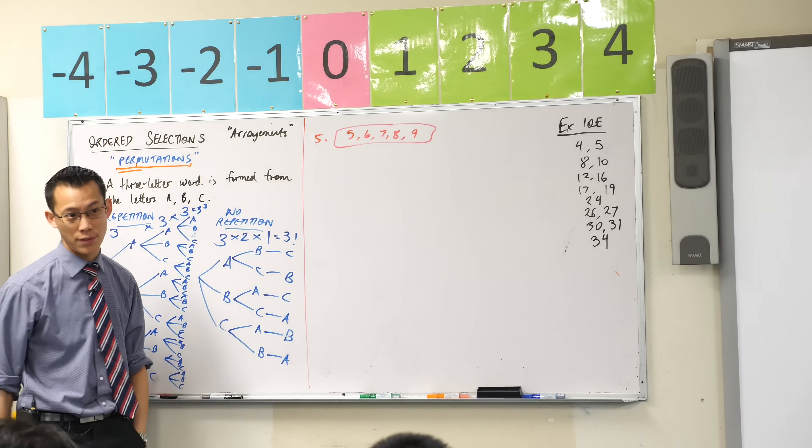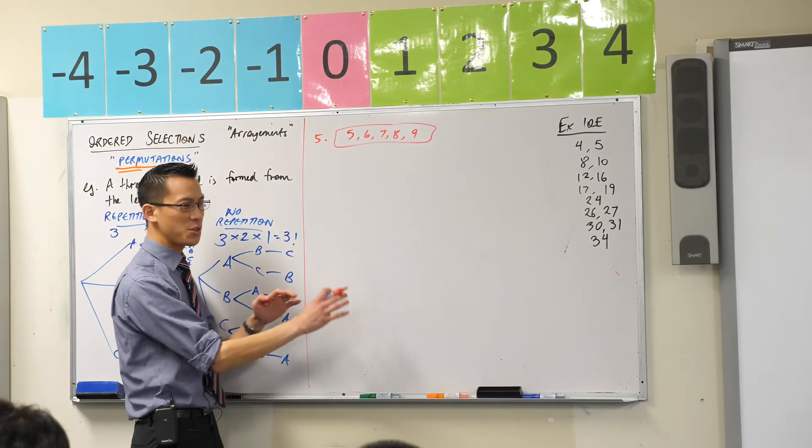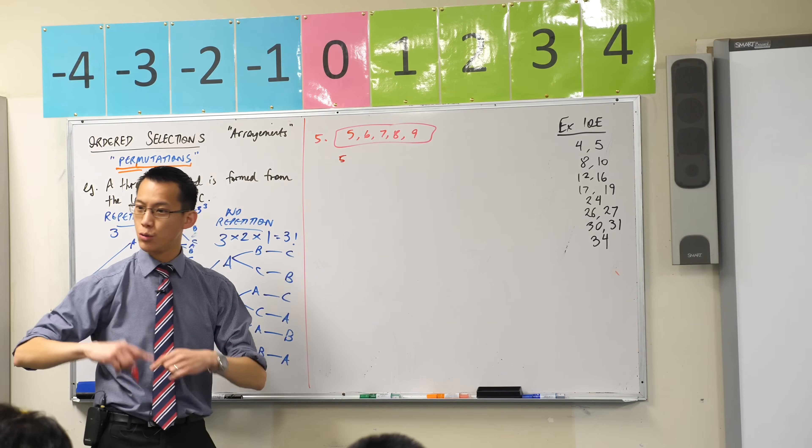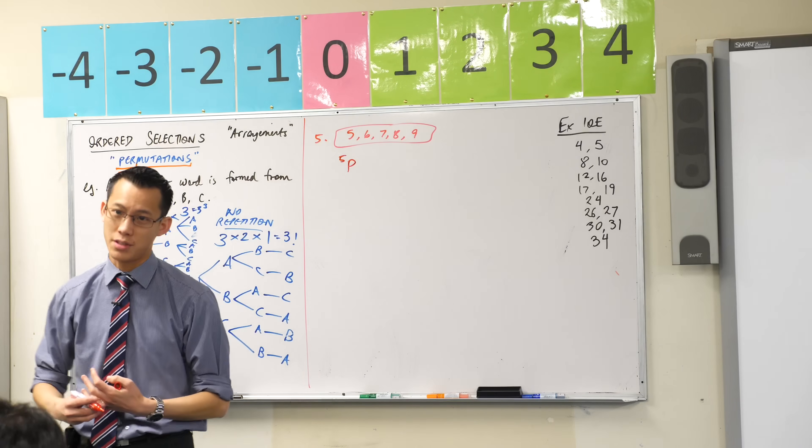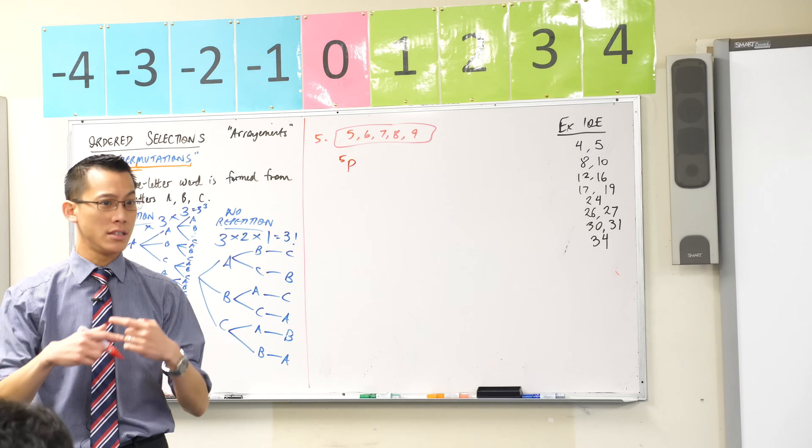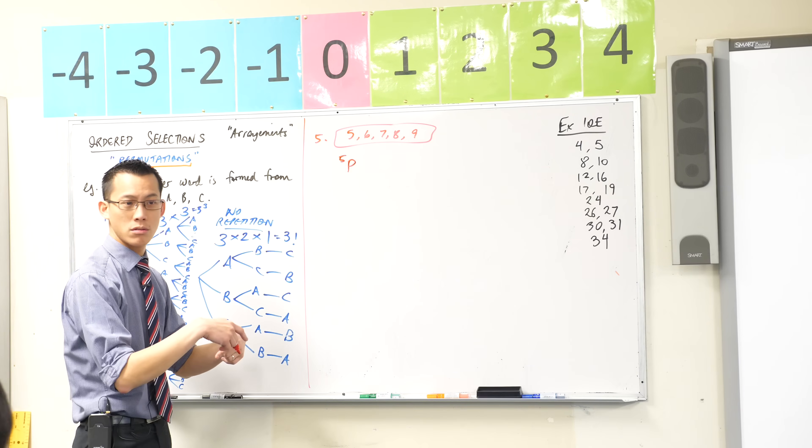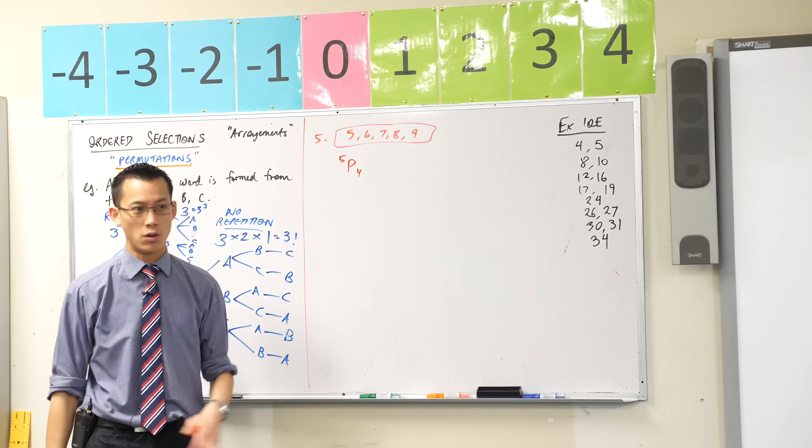So when we think about the permutation for this, if we think about our notation, we would say, using this permutation notation, we would say I've got five things to choose from. I would say 5P. Now have a look at what the question says. How many numbers, digits rather, do I want to choose? I want to choose four of them. I want a four digit number so I'd say 5P4.